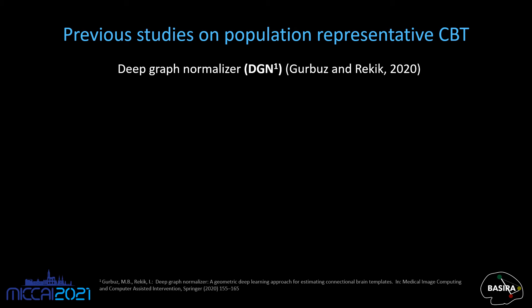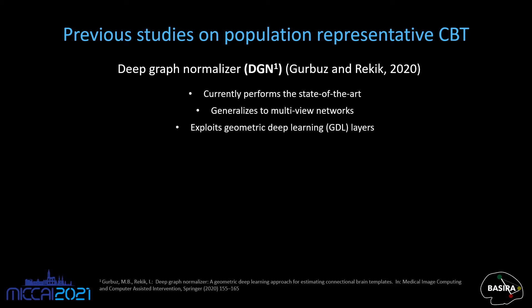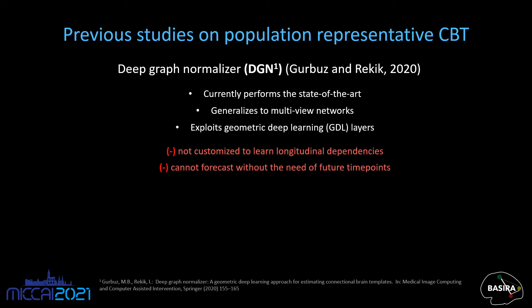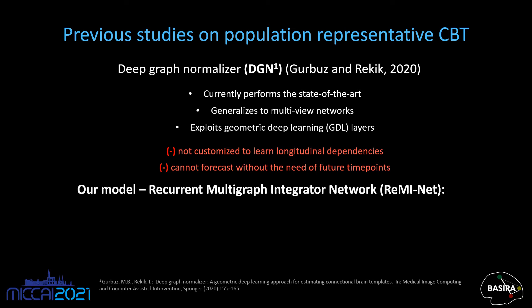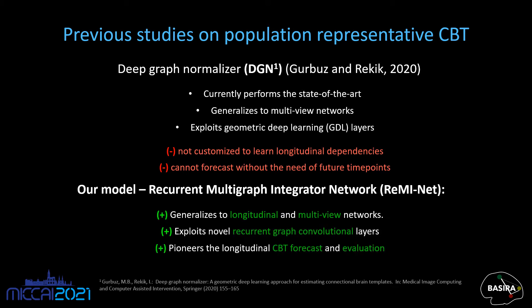Currently, DGM presents the state-of-the-art method in the CBT estimation task. It generalizes to multigraphs and exploits geometric deep learning layers, but it is an end-to-end model that is not customized to learn longitudinal dependencies and forecasts. To address these limitations, we propose the Recurrent Multigraph Integrator Network, in short REMINET, that generalizes to longitudinal and multi-view data, uses novel graph convolutional layers, and pioneers the longitudinal CBT forecast and evaluation.